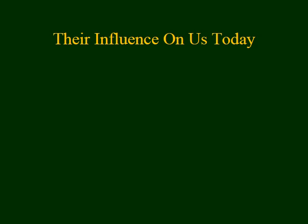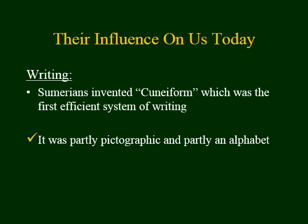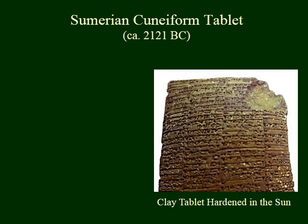Another way in which the Mesopotamians impact us today is in their form of writing. The Sumerians were one group in Mesopotamia, and they invented what's called cuneiform — the first efficient system of writing. It was partly pictographic and partly included an alphabet. It's really difficult to overestimate the importance of writing. They were able to keep records, write laws, write down their histories and their religious beliefs, and even record their crop yields.